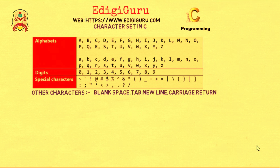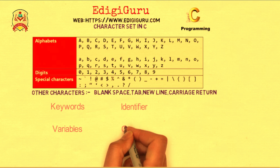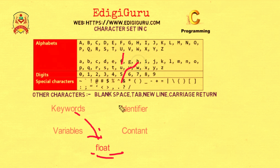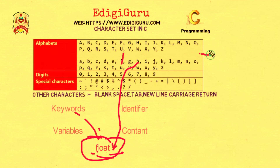By using this character set, we could create keywords, identifiers, variables, and constants in C language. For example, float is a keyword which gets formed by using the alphabets F-L-O-A-T. That means by using the character set of alphabets, we have created one keyword, float, which represents the floating point number or decimal number.